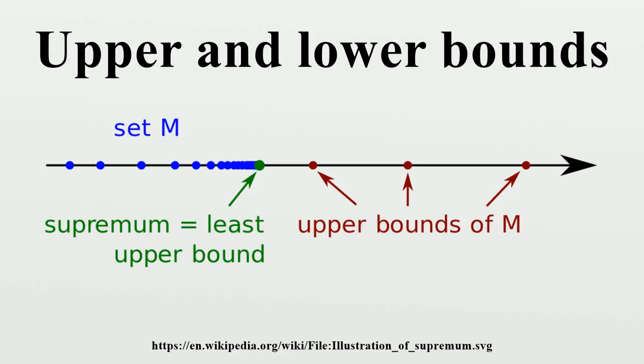The term lower bound is defined dually as an element of K which is less than or equal to every element of S. A set with an upper bound is said to be bounded from above by that bound. A set with a lower bound is said to be bounded from below by that bound. The terms bounded above are also used in the mathematical literature for sets that have upper bounds.